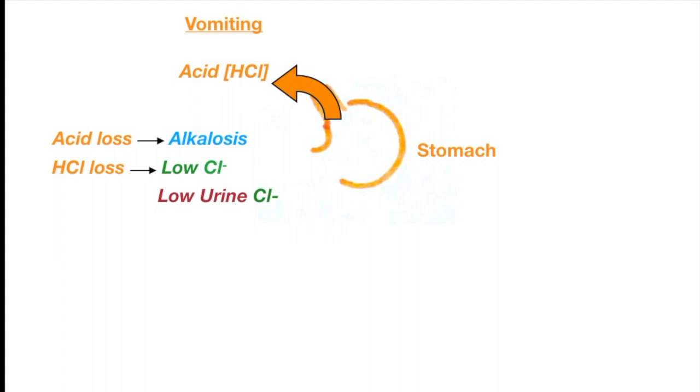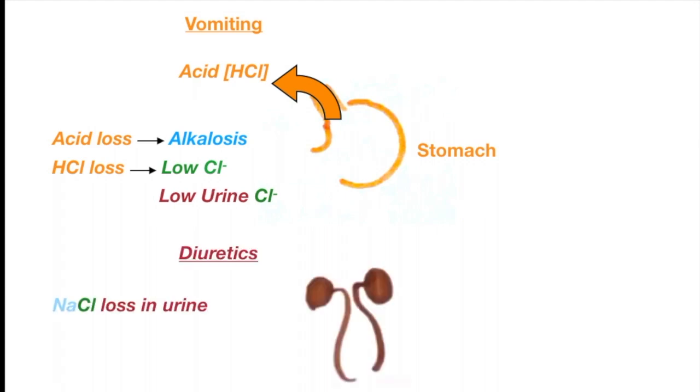However, in patients who are on a diuretic, there is a loss of sodium chloride in the urine. So, along with alkalosis and hypokalemia, these patients will also have a high urine chloride level.